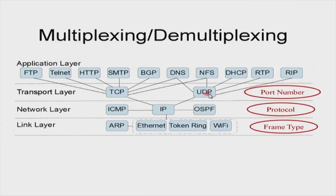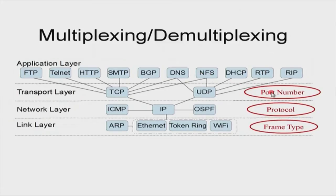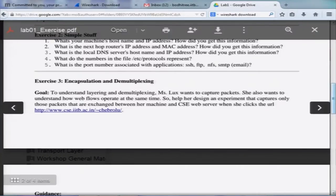Similarly, operating one layer above: will you send the packet to the TCP module or the UDP module? Again, the protocol field is going to help you send it to the right module. And there are many applications at the top — do you send it to HTTP, SMTP, or FTP? Port number plays a role here. If it is port number 80, you will send it to HTTP. This concept of demultiplexing also has a specific exercise dedicated to it.